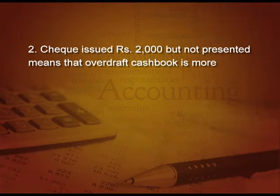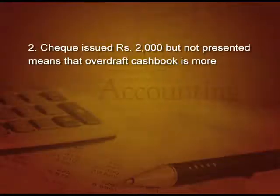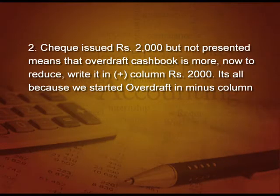Point number 2: check issued 2,000 but not presented means that overdraft in the cash book is more, because when you issue a check you decrease the cash book balance or increase the overdraft. Our overdraft in cash book is more, so now we reduce it — but write it in the plus column, because overdraft is in the minus column and if we write it in the add column it will reduce. Add equals minus column; minus equals positive column — all because we started overdraft in the minus column.